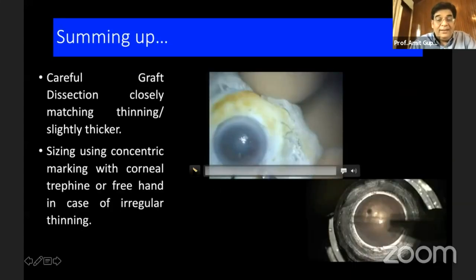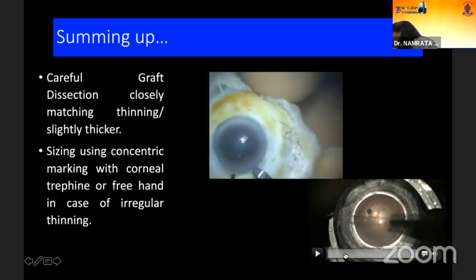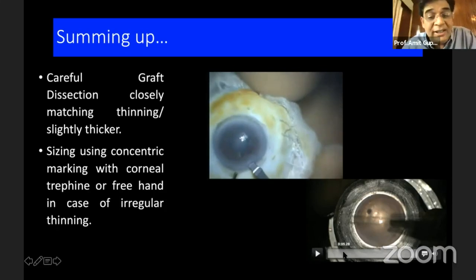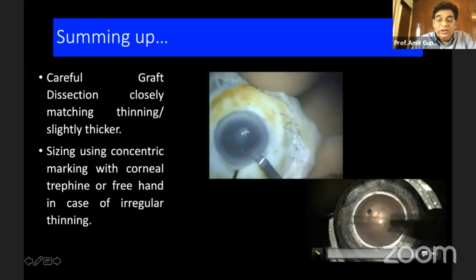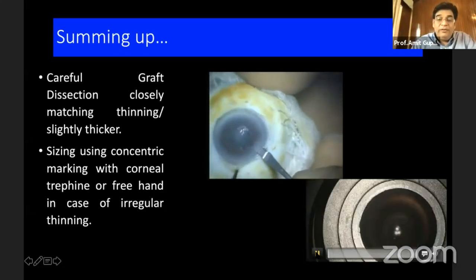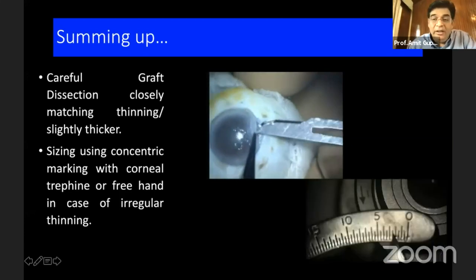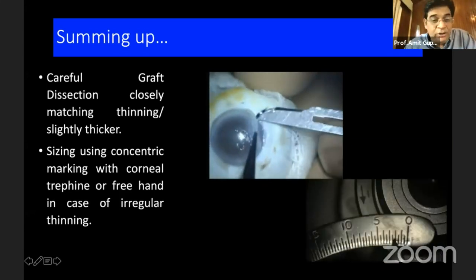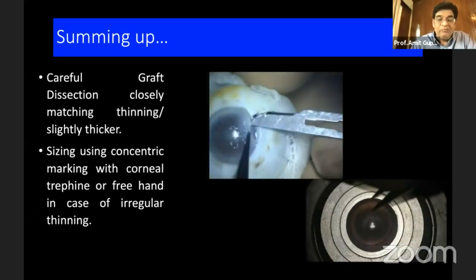When dissecting the graft, it should closely match the recipient bed thickness — if the graft is too thin or too thick, there are high chances of dislodgement and it won't heal well. We can fashion it freehand using a crescent knife or lamellar instruments, or use refined trephine blades.